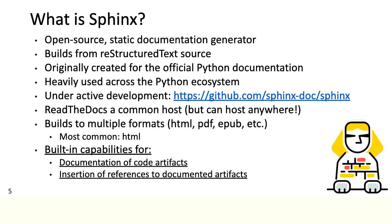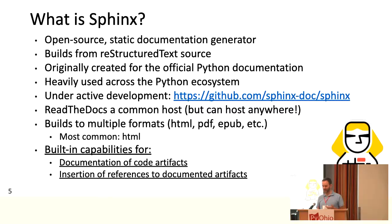Of particular relevance to this talk is the ability to document code artifacts — modules, classes, functions, et cetera — and also to insert references to those artifacts both in the documentation you're building and in the documentation of other projects. So instead of manually inserting a hyperlink to, say, string.format in the Python docs — which you'd have to go and curate manually every time things changed — Sphinx provides a mechanism where you don't have to do that.